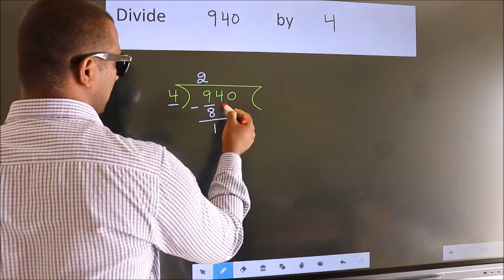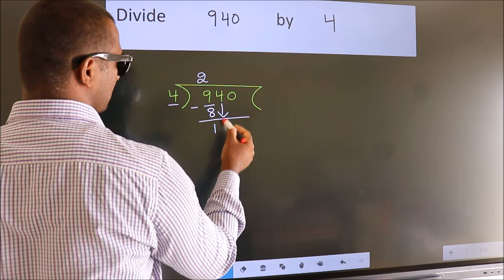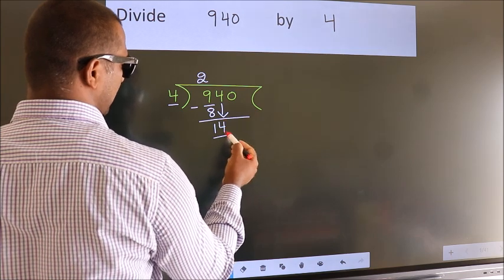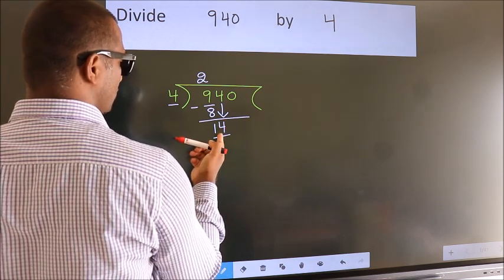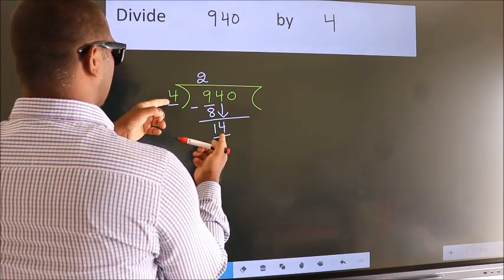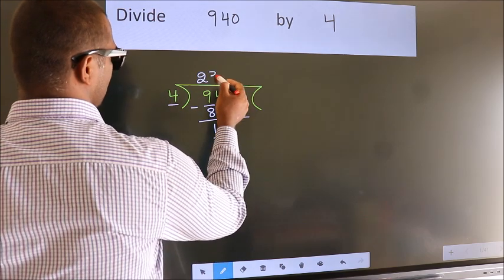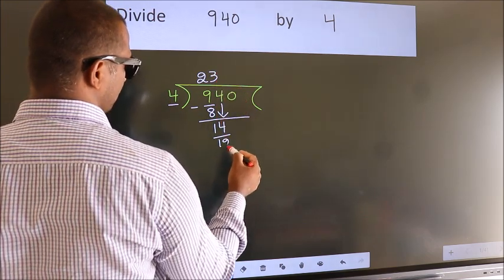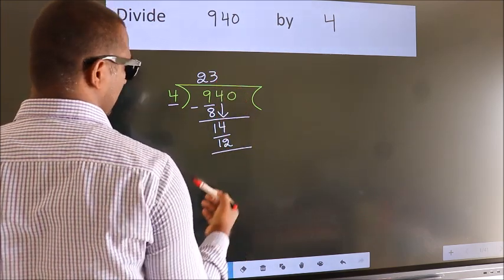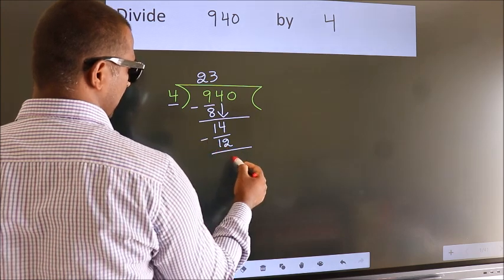After this, bring down the beside number. So, 4 down. So, 14. A number close to 14 in the 4 table is 4 threes, 12. Now we subtract. We get 2.